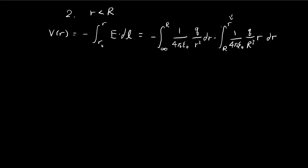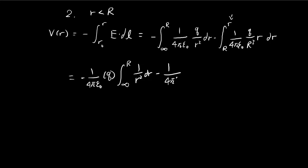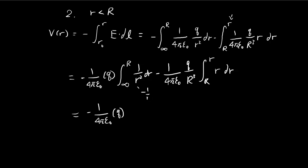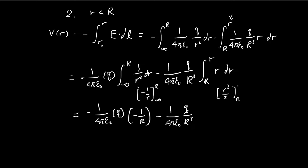We're going to have to break up the integral into two parts. Pulling out the constants, the first integral goes from infinity to capital R with 1 over r squared dr, and the second part goes from capital R to small r with an r over R to the third dr. Integrating these gives negative 1 over r from infinity to R, leaving negative 1 over capital R, and r squared over 2 from capital R to small r.